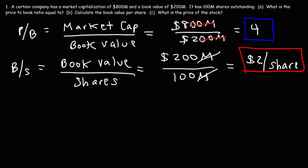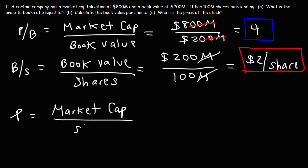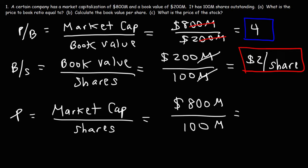Now let's move on to part C: what is the price of the stock? To calculate the price of the stock, we can take the market capitalization and divide it by the shares outstanding. Keep in mind, the market cap equals the price of the stock times the shares outstanding, so the price is the market cap divided by the shares outstanding. The market cap is $800 million and there are 100 million shares outstanding, so 800 over 100 gives a stock price of $8 per share.